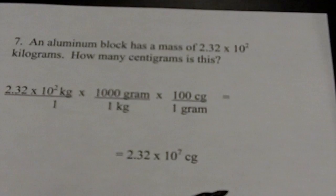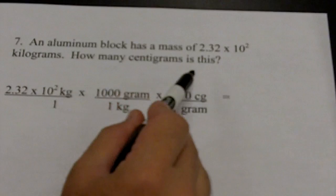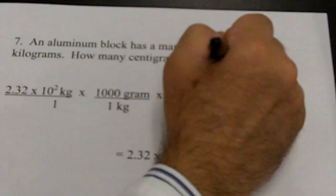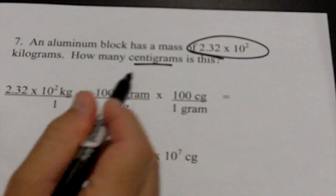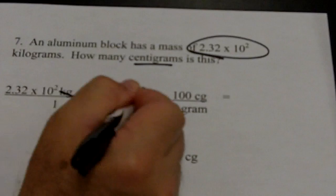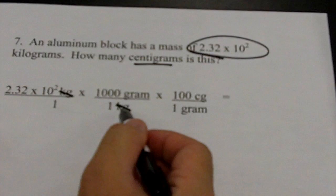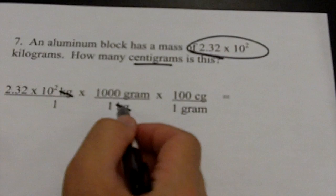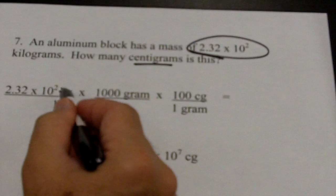Let's take a look at number seven. An aluminum block has a mass of 2.32 times 10² kilograms. How many centigrams is this? You know the routine: look for numbers — circle 2.32 times 10² kilograms, underline centigrams. Put 2.32 times 10² kilograms over one. Kilograms goes in the denominator. I don't know how many centigrams there are in a kilogram, so I have to go through the base unit — grams. There are a thousand grams in one kilogram.